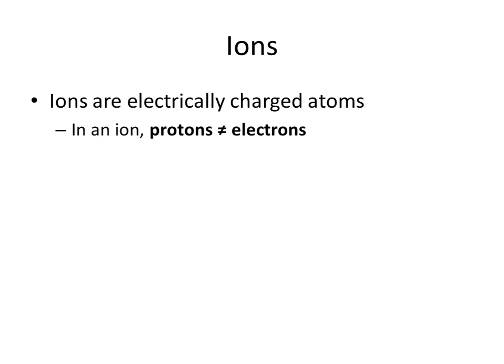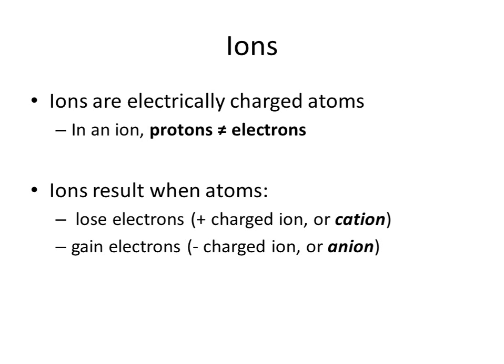Ions are atoms where that balance of protons and electrons has been upset. Ions basically are electrically charged atoms. Ions can result when atoms either lose electrons, in which case they become positively charged, because now there's more positive protons than negative electrons. These are also referred to as cations. Or when an atom gains additional electrons, in which case now there is an excess of negatively charged particles, and so overall net charge is negative. These are also referred to as anions.